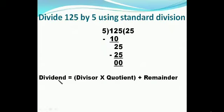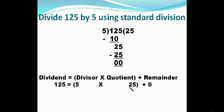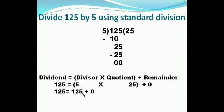Now we verify: Dividend = Divisor × Quotient + Remainder. So 125 = 5 × 25 + 0. Multiplying 5 by 25 gives 125, so 125 = 125 + 0 = 125. Both the right-hand side and the left-hand side are the same, so the answer is correct and verified.